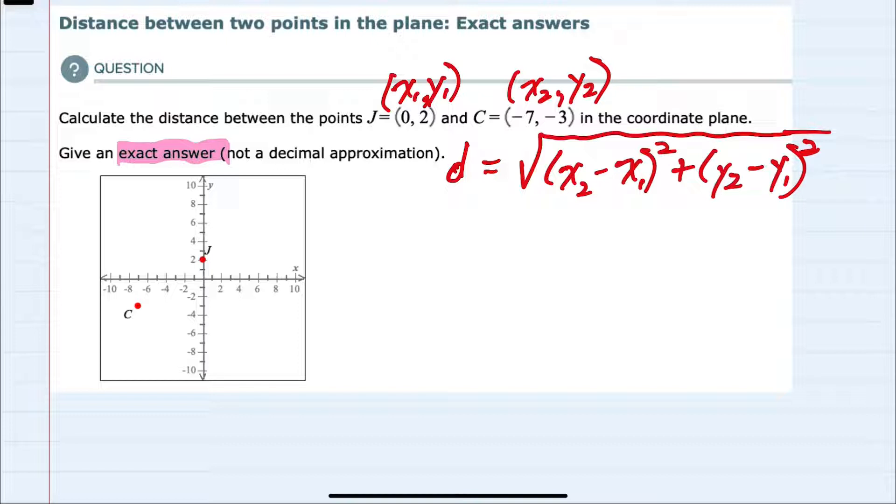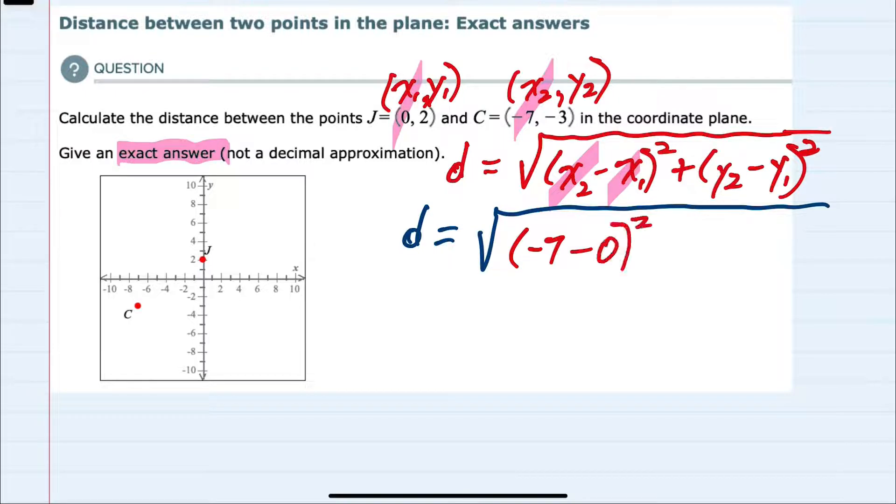So I can now substitute into the distance formula and the distance will be the square root of, here I'm going to replace x2 with minus 7 minus x1 which here is 0 squared, plus y2 which here is minus 3 minus y1 which here is 2, also squared.